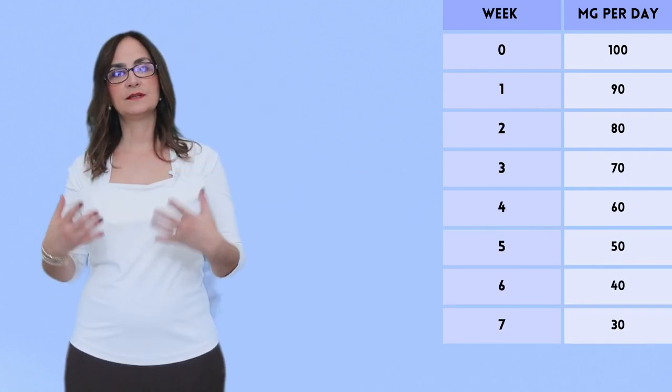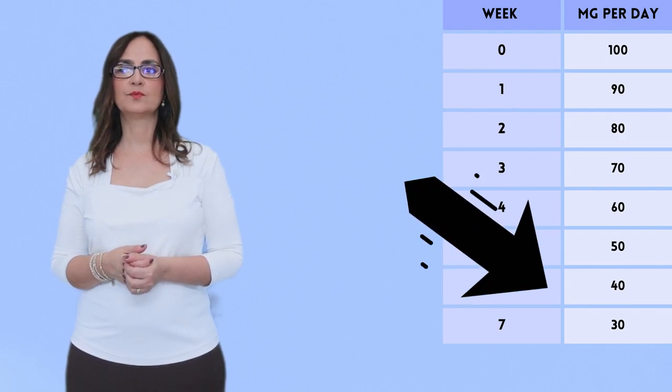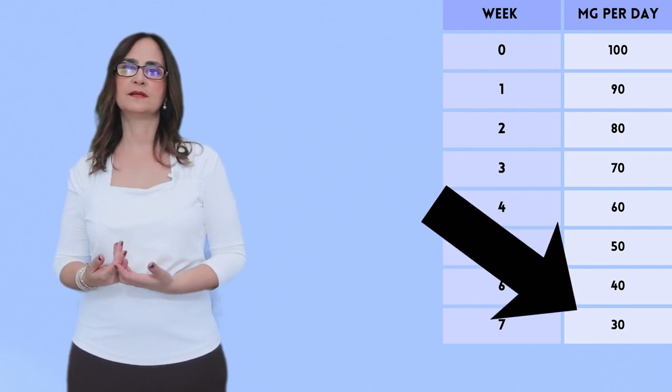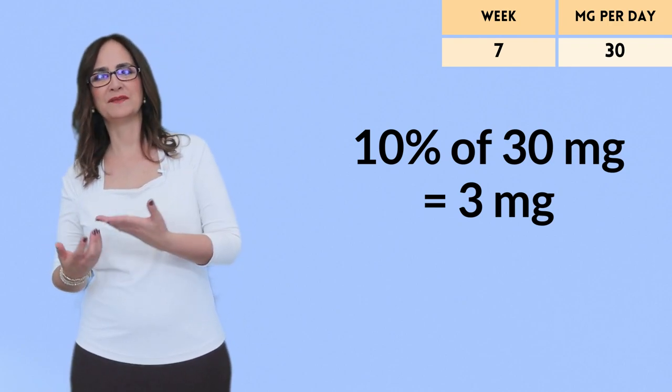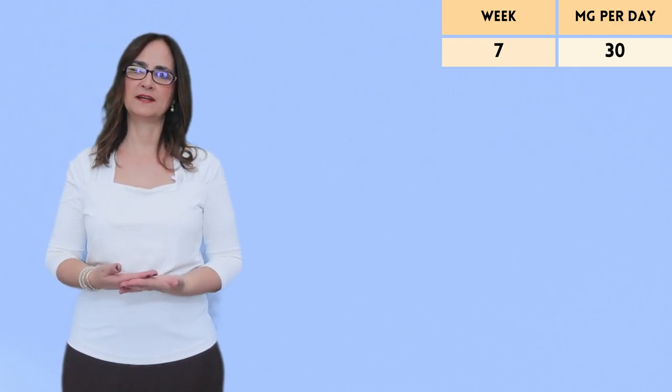At this point, which is 30% of the baseline dose, we recalculate the 10%, so 10% of 30 is 3, but since we don't have tablets of 3mg, we round up to 5mg.